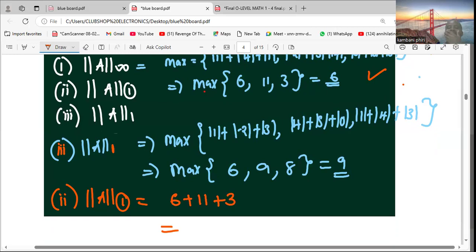So 6 plus 11 gives us 17, and 17 plus 3 we get 20.